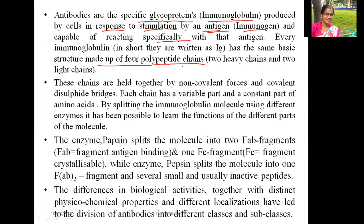We have five different types of immunoglobulin. Remember these as GAME-D: G for IgG, A for IgA, M for IgM, E for IgE, and D for IgD. These are the five immunoglobulins.